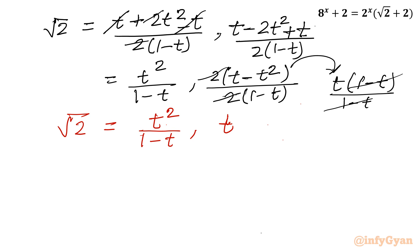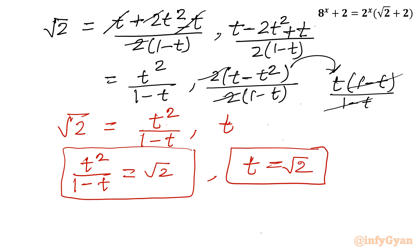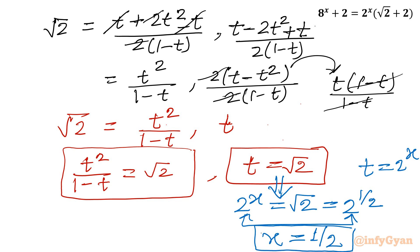Now equating: t²/(1 - t) = √2 is the first equation (a quadratic), and the second gives t = √2 directly. Substituting back t = 2^x: 2^x = √2 = 2^(1/2). Since bases are identical, the exponents must be equal, so x = 1/2. One solution is x = 1/2.